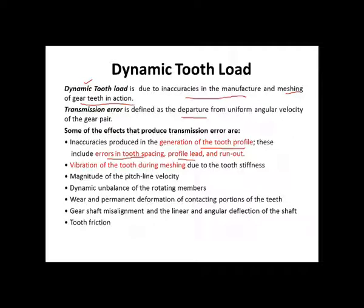Transmission error is defined as the departure from uniform angular velocity of the gear pair. Regarding the difference between gear and pinion: when two gears are in contact, the gear having the smaller number of teeth is known as the pinion. The effects that produce transmission error include: inaccuracies in the generation of the tooth profile, such as errors in tooth spacing, profile, lead, and run-out.